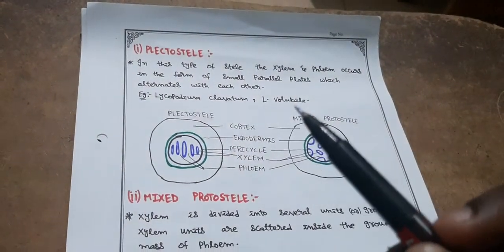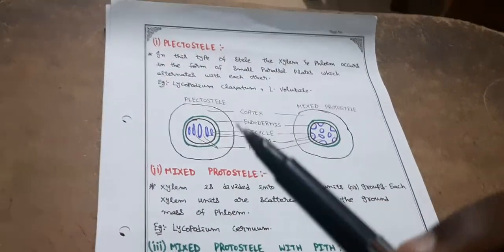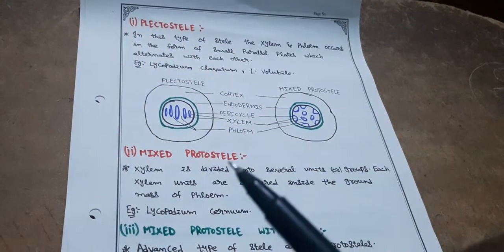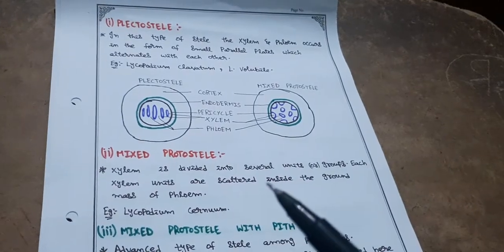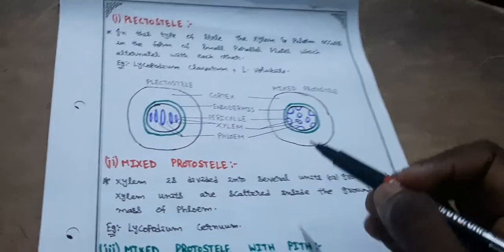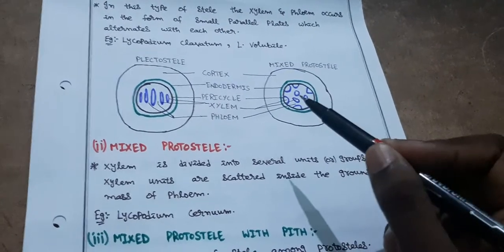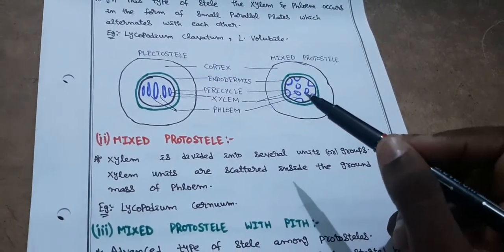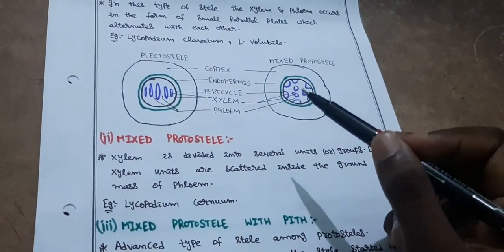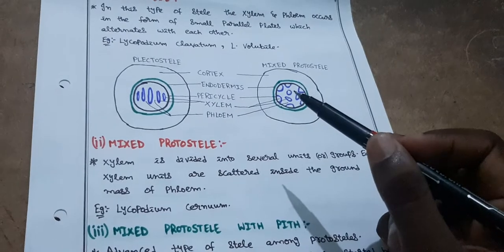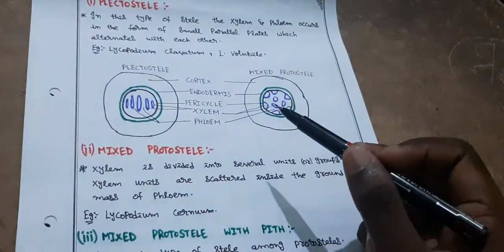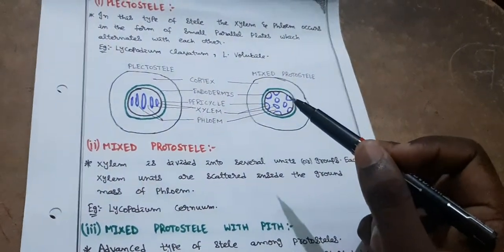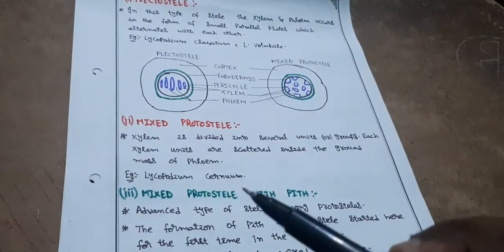In plectostele the small parallel plates of xylem and phloem alternate — examples are Lycopodium clavatum and Lycopodium volubile. Next, mixed protostele — the name itself suggests xylem is divided into several units or groups, each scattered inside a ground mass of phloem. Example: Lycopodium serratum.